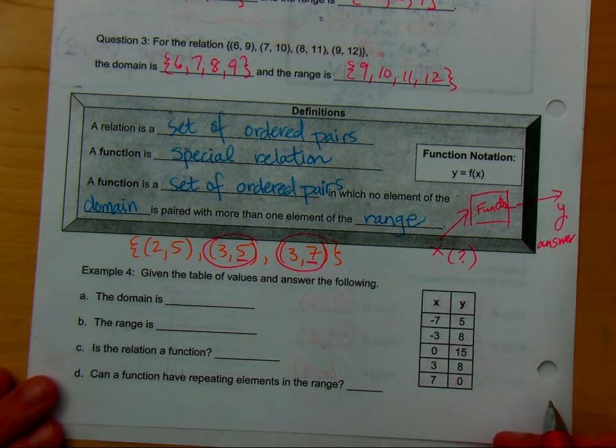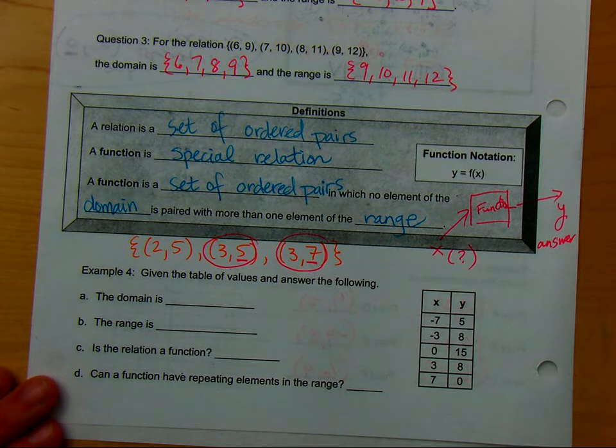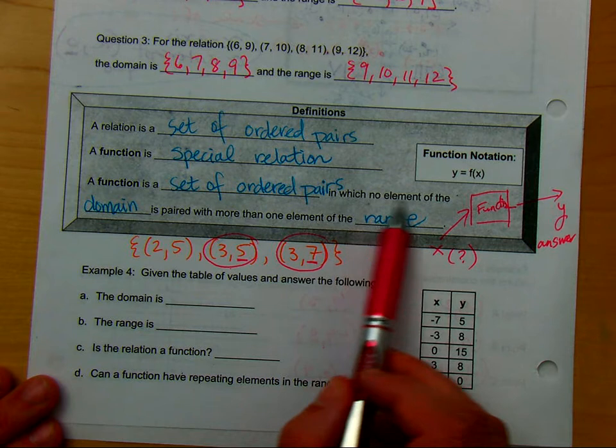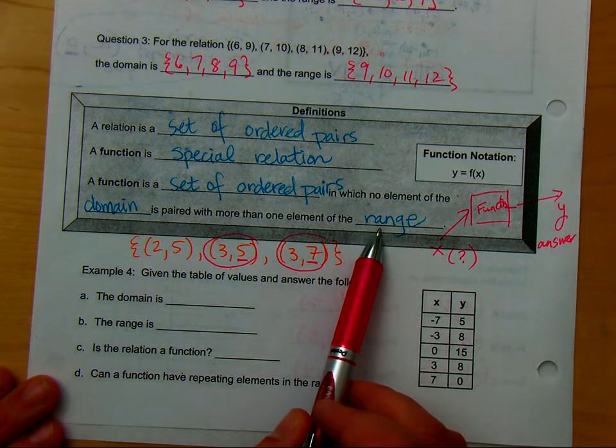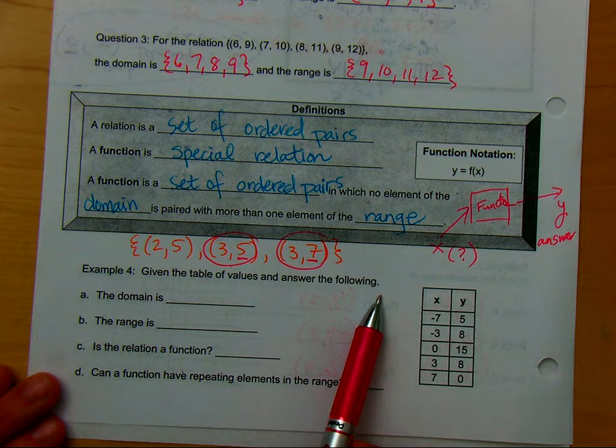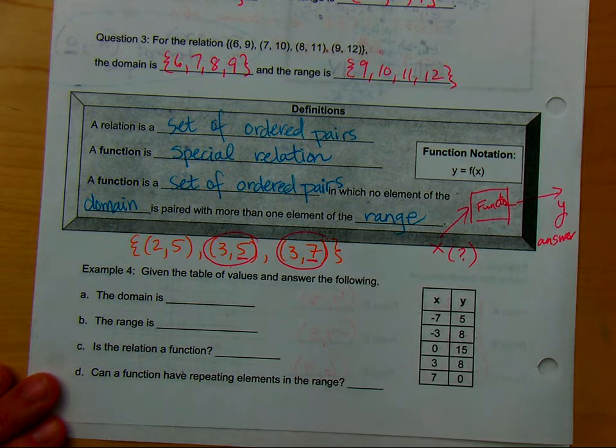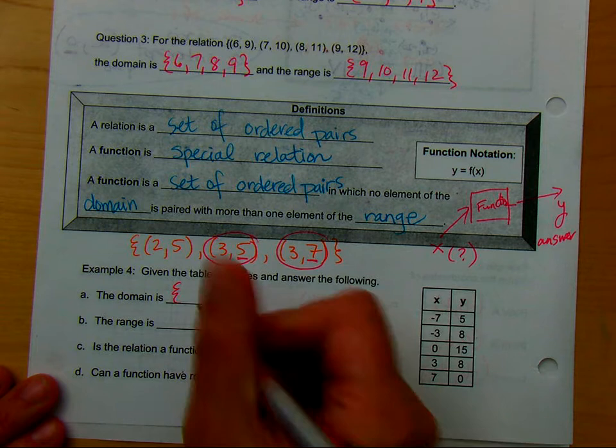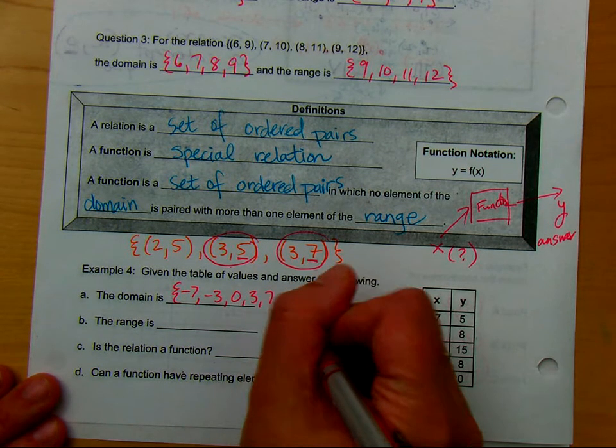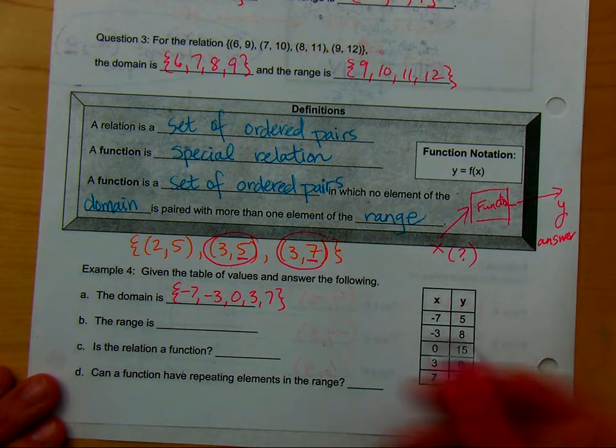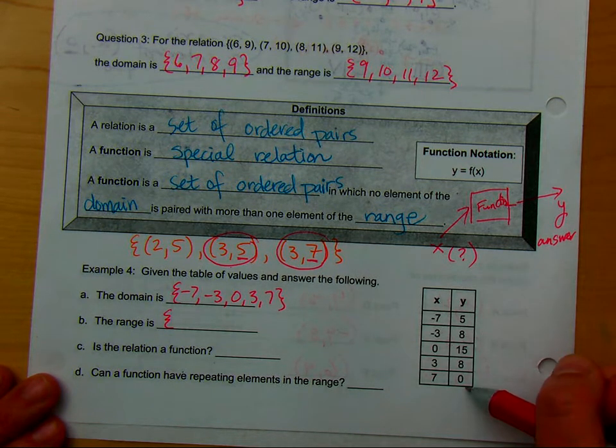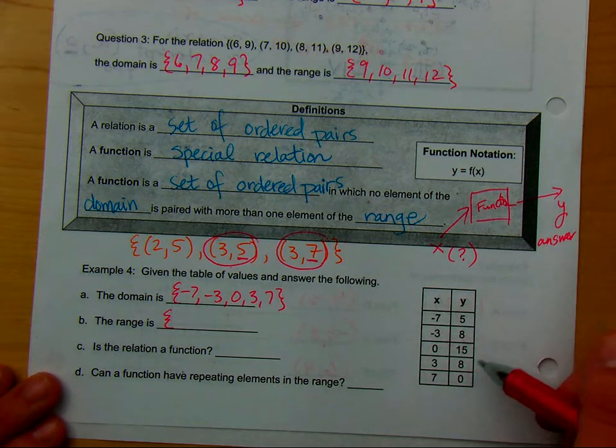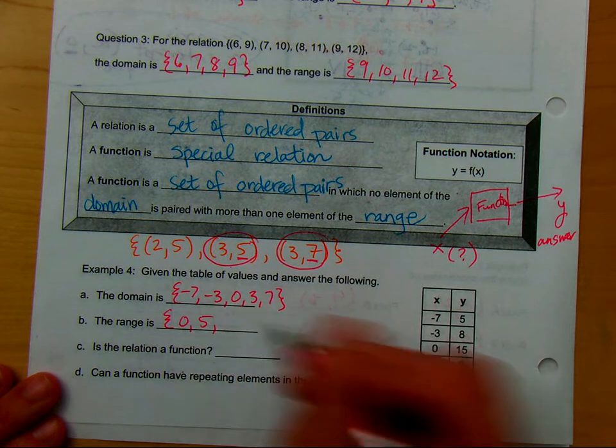That would be like saying to the same question yes, no. Is the sky blue? Yes. No. Well, which one is it? So every single question, every element of the domain, and three is an element of the domain, has to be paired with only one element of the range. So given the table of values, answer the following. What's the domain of this table? And the domain we say is the X values. So who can tell me what's the domain? All of the X values are the domain. What's the range then? Let's list them in order. So it doesn't matter that they're not listed in order here. Tell me the numbers that exist in the range. Five, zero, and five, and eight.